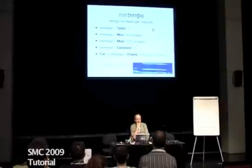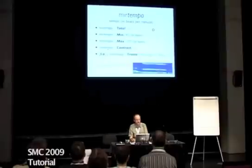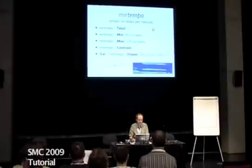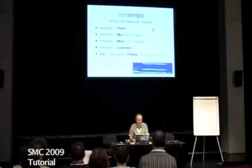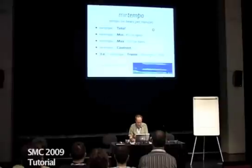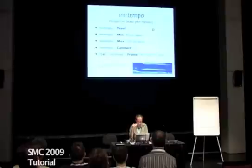Something important in the MIR toolbox is that some operators can have several outputs. For instance, for MIR tempo, the first output is the tempo itself — if frame-decomposed, you see the evolution of tempo. If we use two outputs with this syntax, the second output will be the computation used for that estimation, here the autocorrelation of the envelope. We see the peaks indicated by plus signs, and we can observe that one peak was detected at another periodicity.